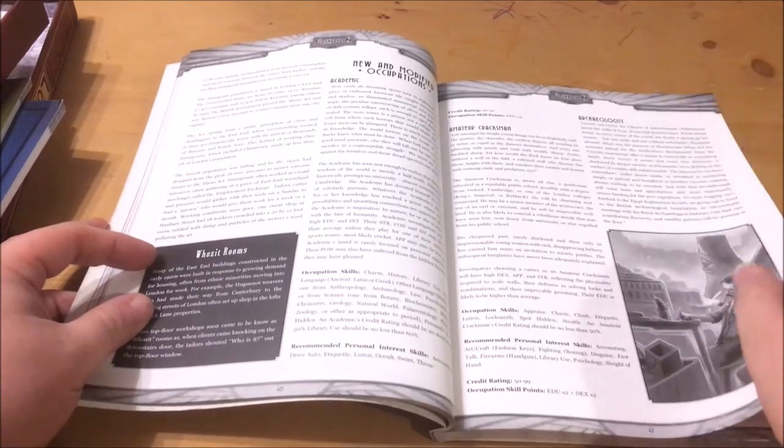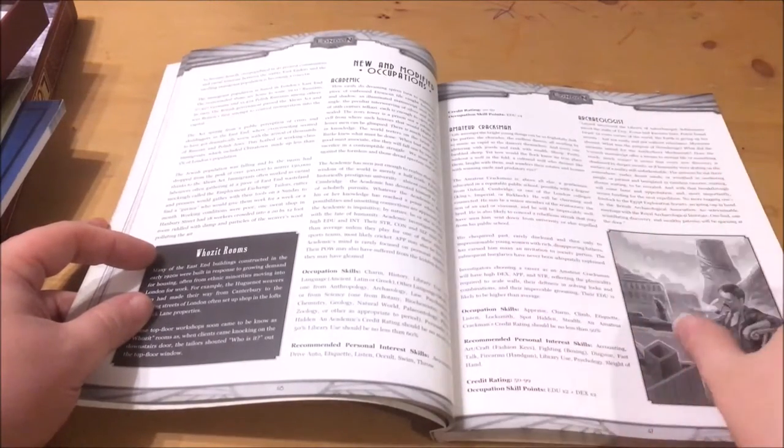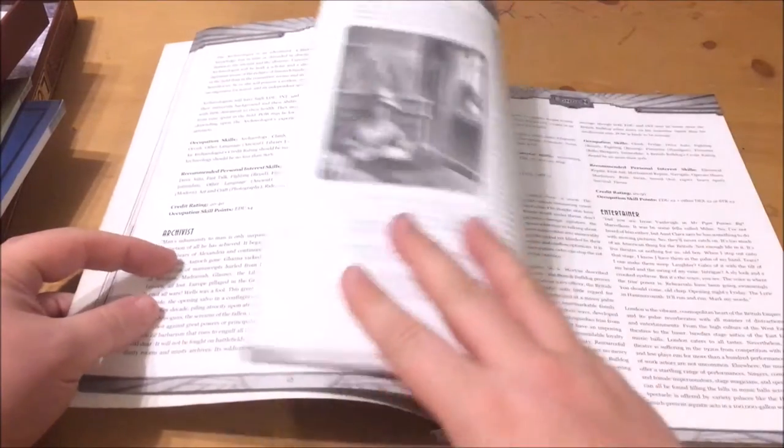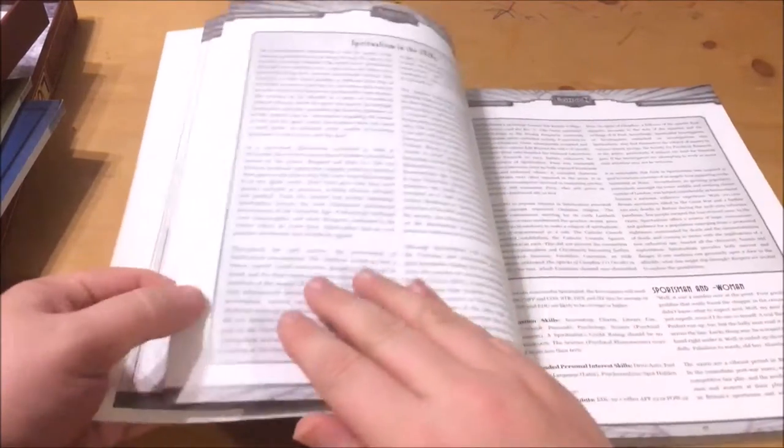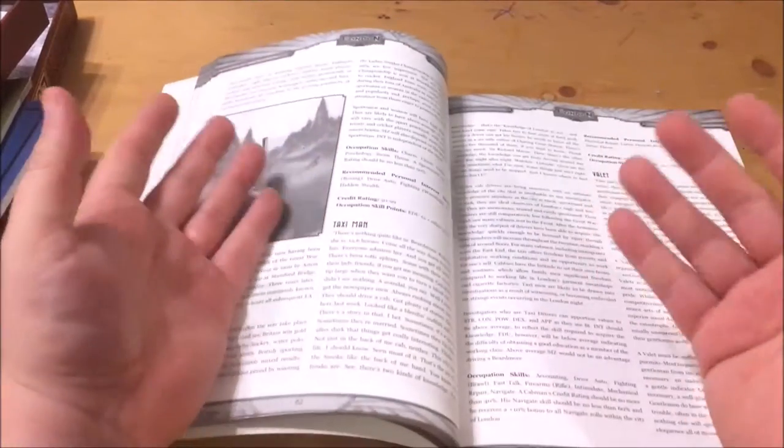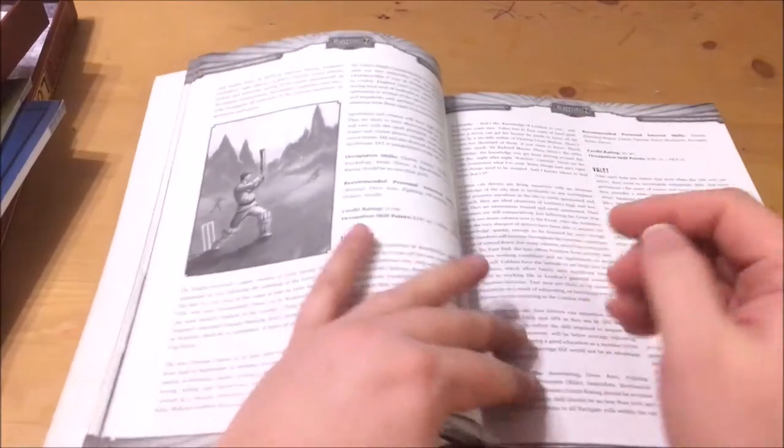Moving on it goes on to detail investigator classes with some very London feeling ones like the aristocrat, the British bulldog and so good information on spiritualists including how to summon a spirit guide. We also have a list of notable people of London which includes the likes of Agatha Christie, Winston Churchill and King George V.